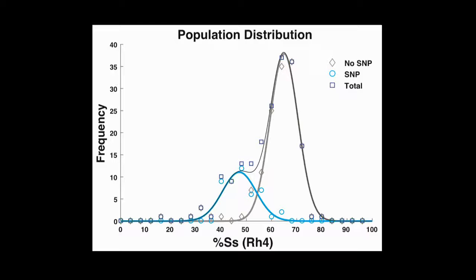Just to show you that data in a different way, I think you can really appreciate from this graph that there are two distinct populations. A population with the SNP that has a lower spineless expression frequency than the population without the SNP represented in gray.